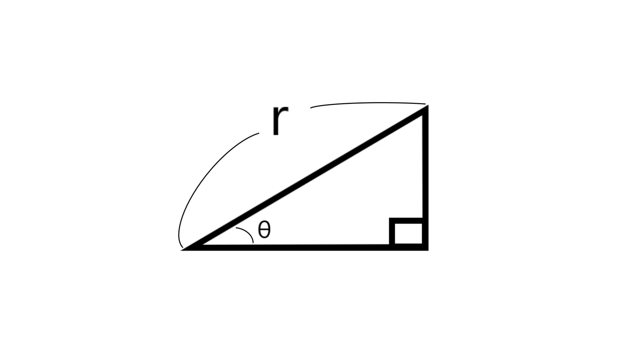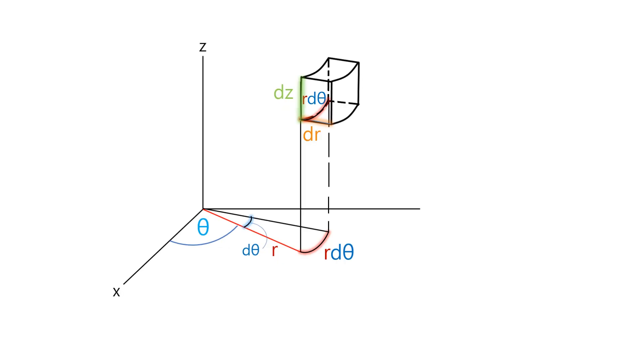then, by the definition of cosine and sine, the base is R cosine theta and the height is R sine theta. If you understand this picture, let's look at this picture again.